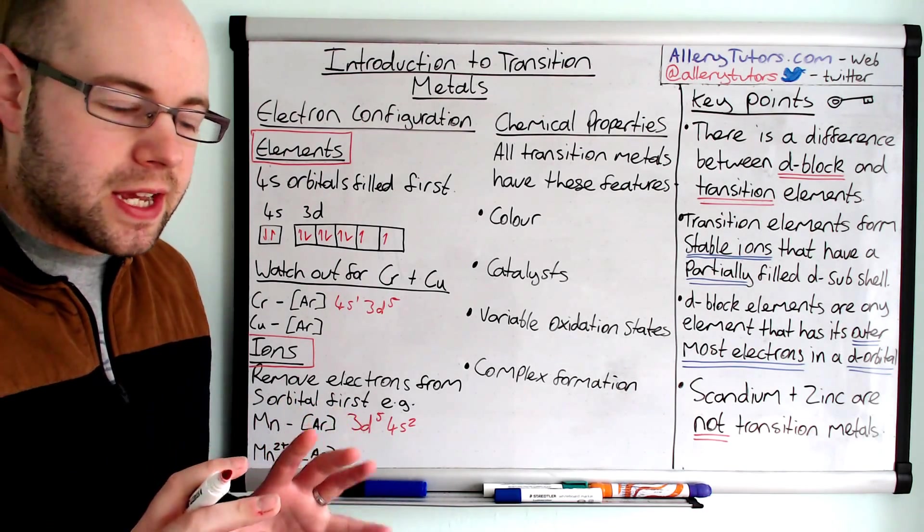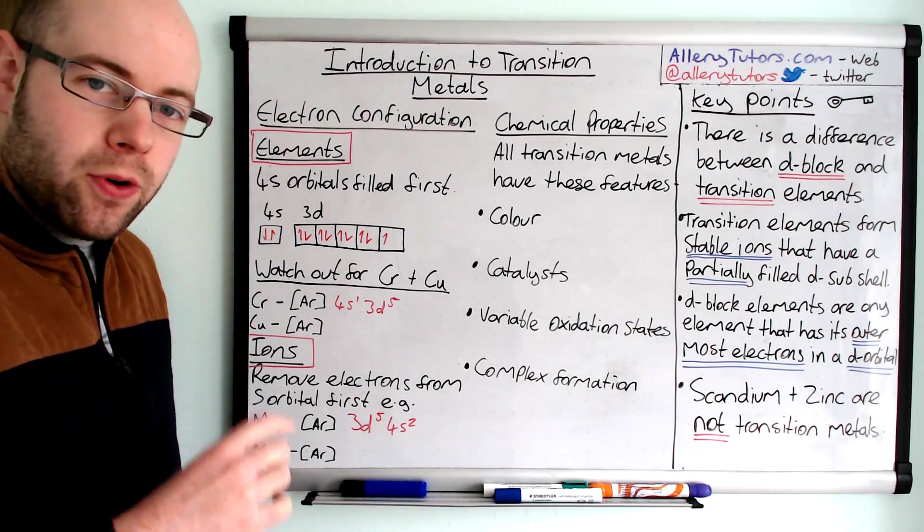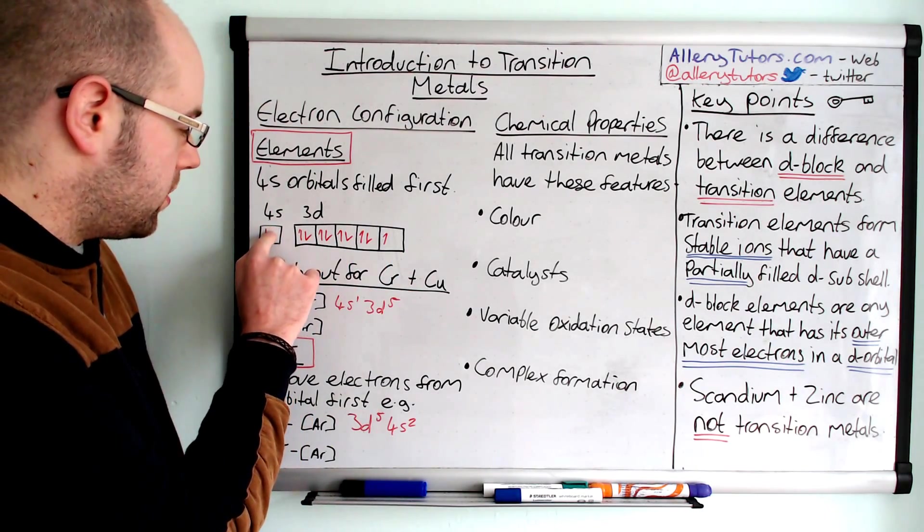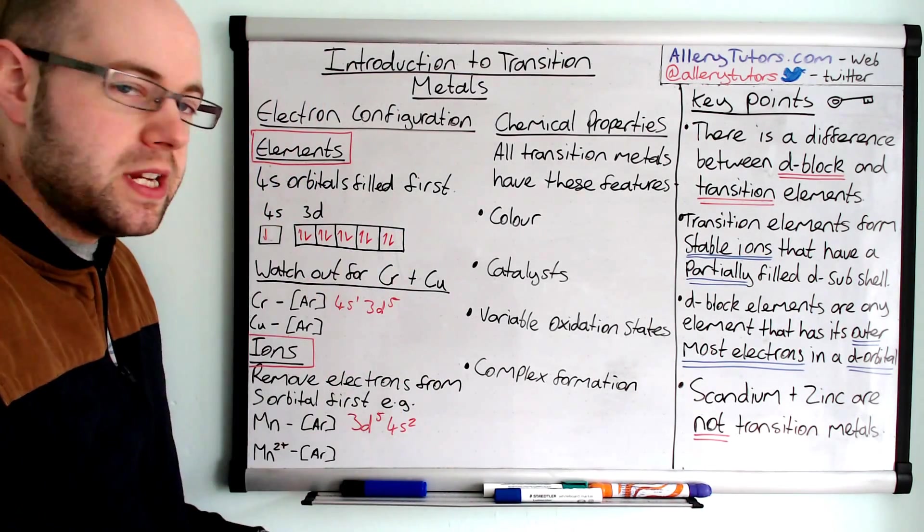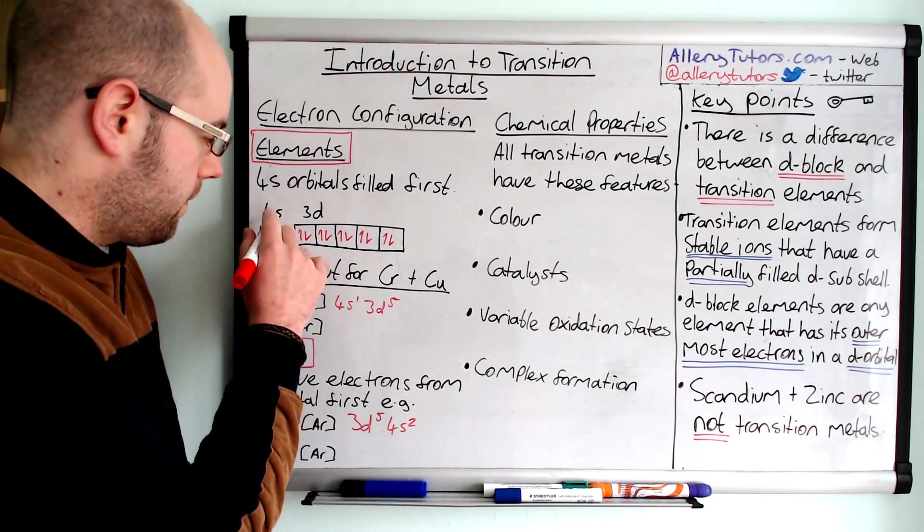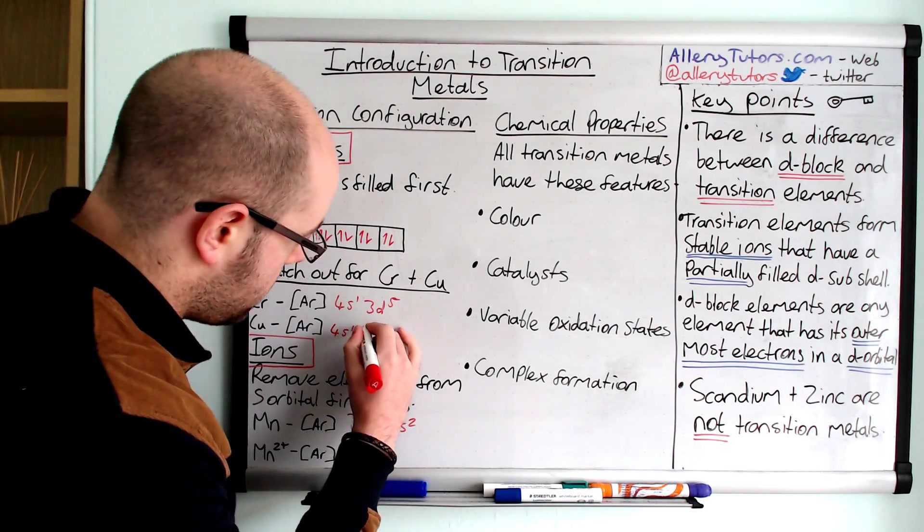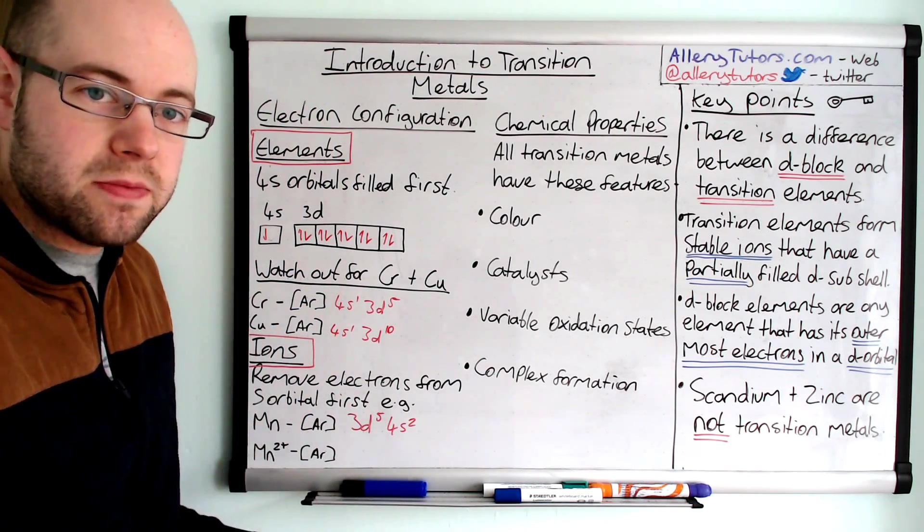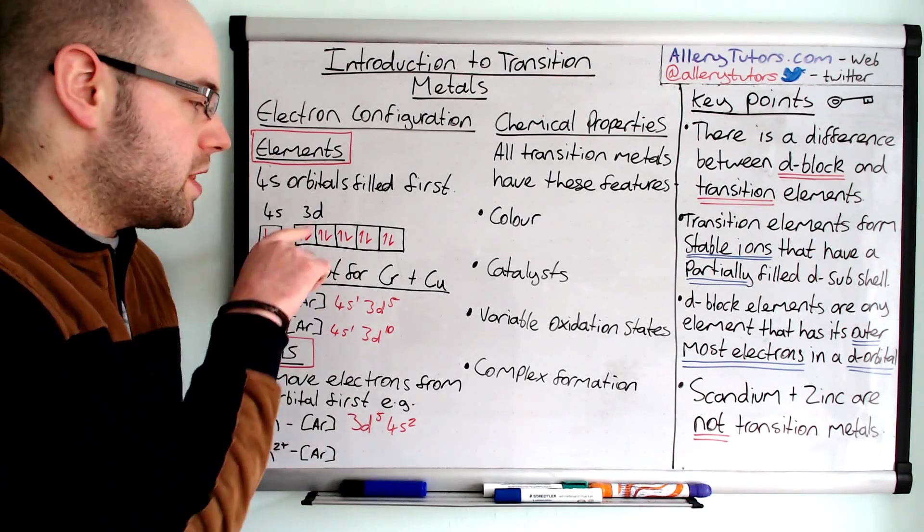And the next one along would be copper. Now, copper does a very similar thing to what chromium did. It's one of these bizarre ones. So we'll add the extra electron for copper there. But again, to form a full d subshell is more stable than leaving it like this. So the electron from the 4s orbital here will then move into this orbital. And now we have a full 3d subshell, which is more stable than the configuration that we had before. So for copper, the configuration is the configuration for argon, and it will be 4s1 and then 3d10. So you can see that we have a 4s1. And these are the only two elements in the transition metal block in that first row that actually have one electron in the s orbital when they're an element.